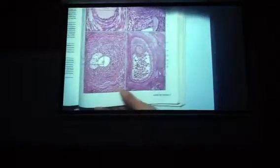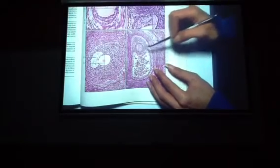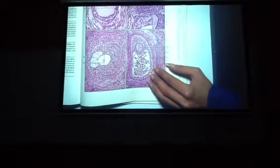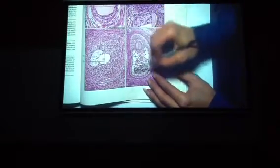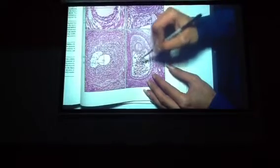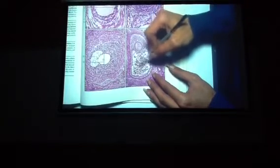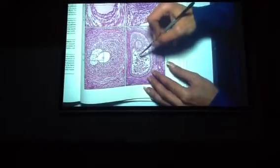Then what you're looking for is what's called a Graafian follicle, which is the same thing as a tertiary follicle. The Graafian follicle is going to be much larger. The oocyte is going to sit in the middle, and it's going to have a very large open space that's filled with a fluid known as an antrum.